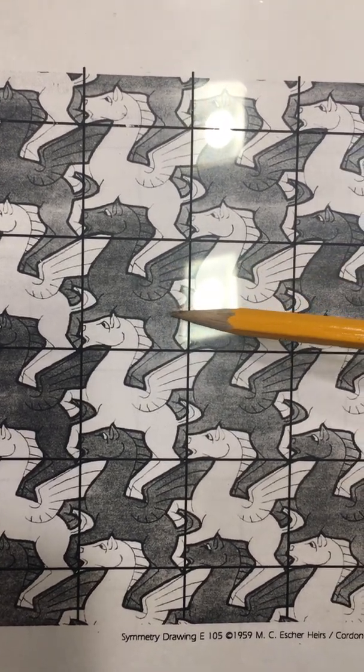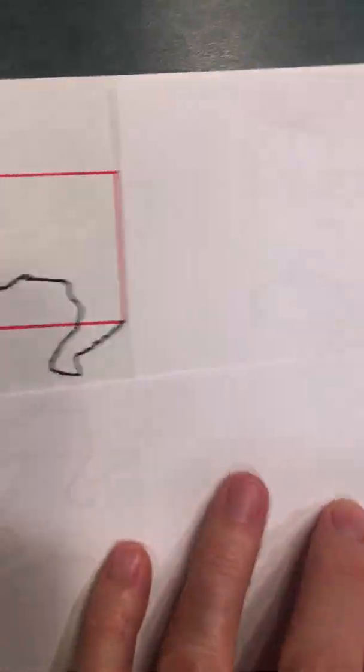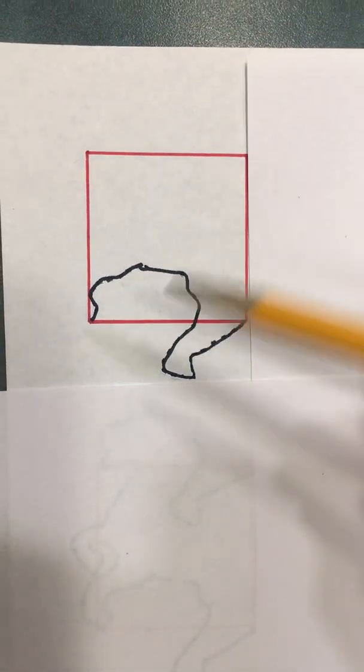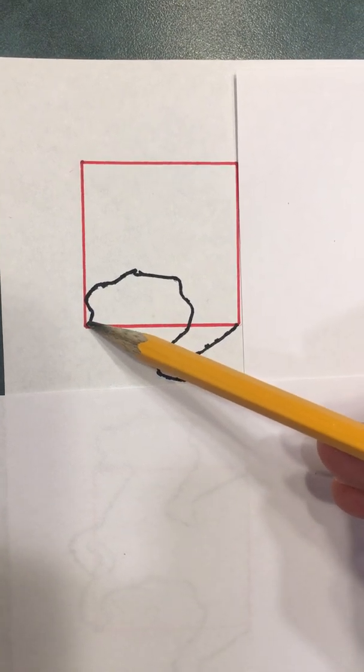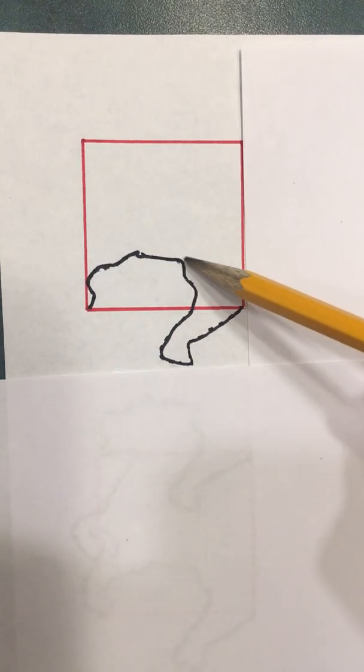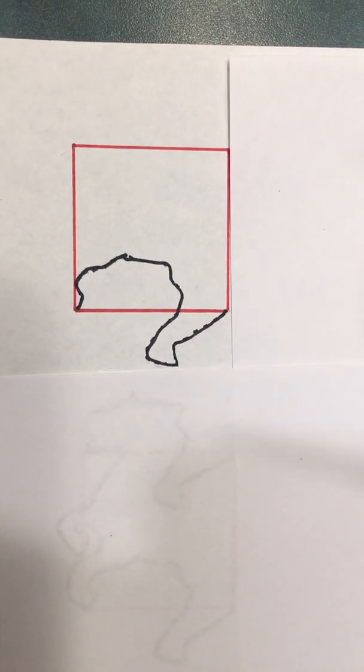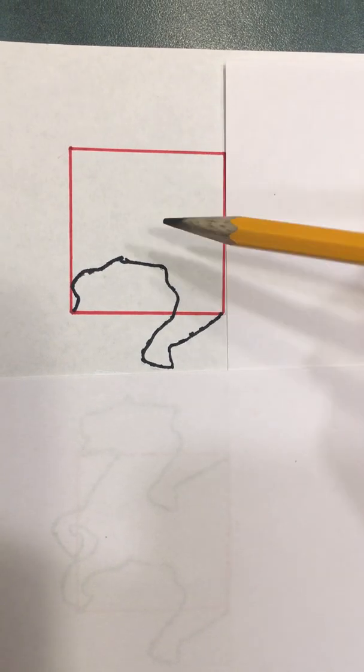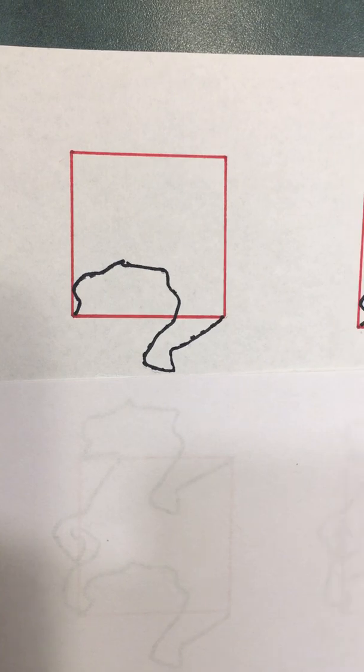This square became this flying horse, and I'm going to show you how that worked. So here we go. Escher started out with this red square, and what he did is he made basically a squiggle that went from one vertex squiggling all the way around to the other vertex. And since this is going to be a translation tessellation, a slide tessellation, he took that squiggle and he slid it up to the top side.